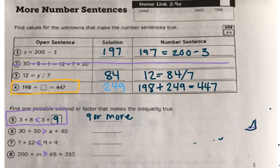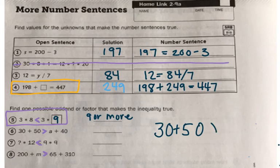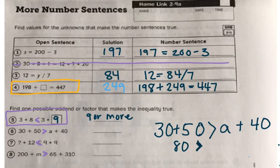Number six. On your whiteboard, would you please write 30 plus 50 is greater than A plus 40. So the first thing that we want to do is go ahead and solve the left side of the equation. 30 plus 50 is 80. So we want the left side to be greater than the right side. So if you look at A, what could I add to A so that it's going to be less than 80 because the left side has to be larger than the right-hand side.